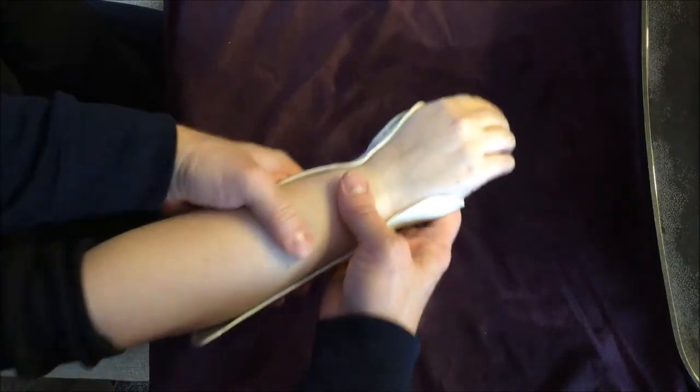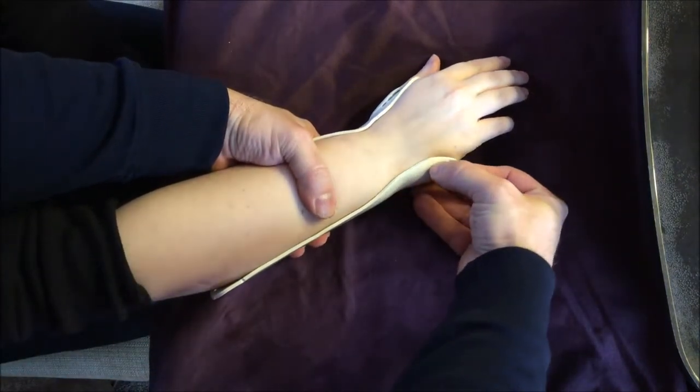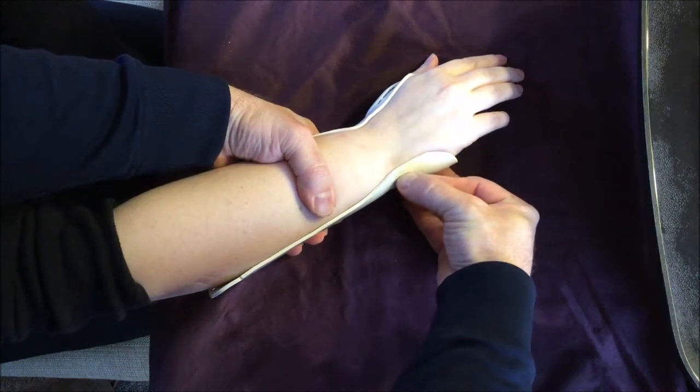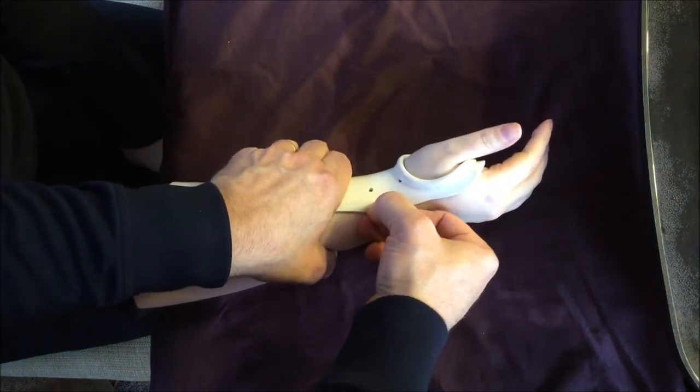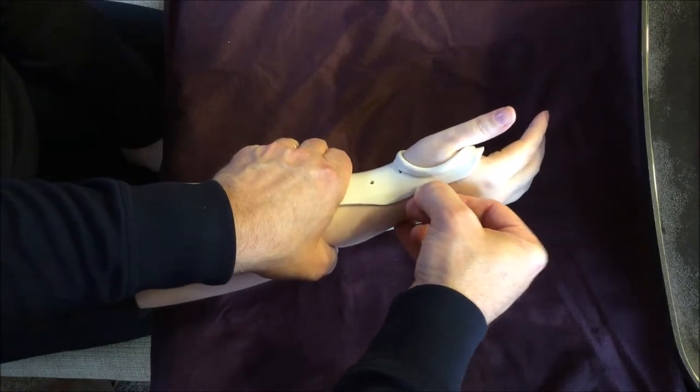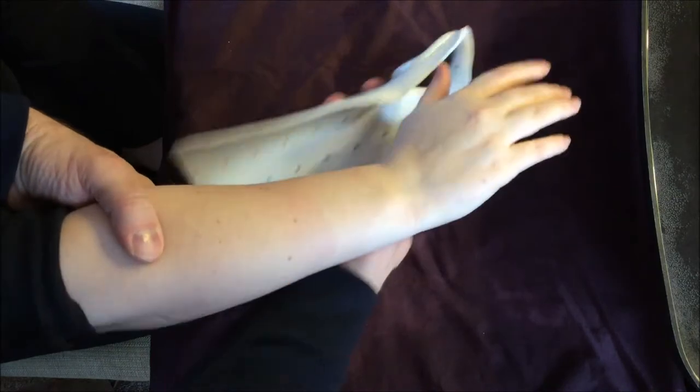And then on the back side, we can see that we need to trim a little bit off of the sides of the splint by the wrist. It wraps around just a little bit too much, more than halfway around the forearm, and also is a little close to the ulnar head. So we're going to trim that off.